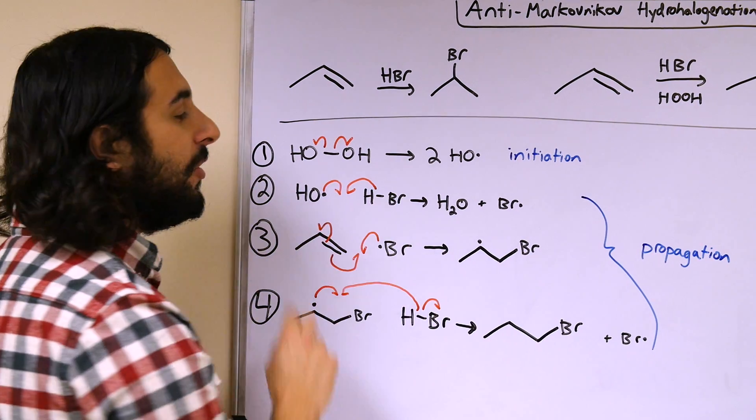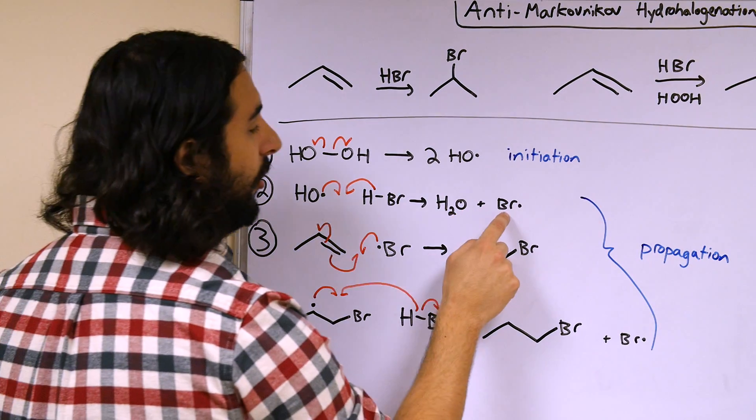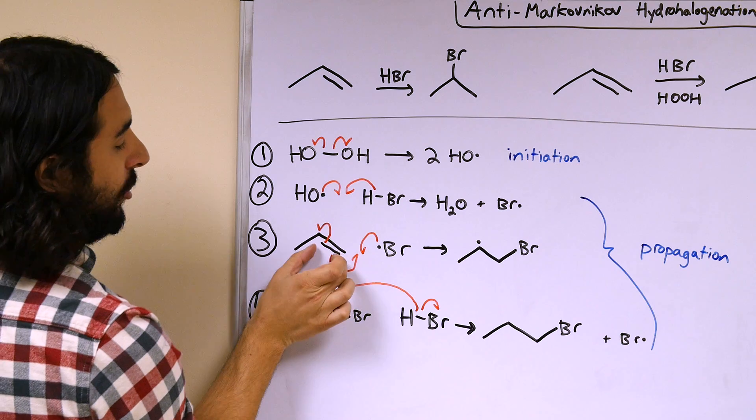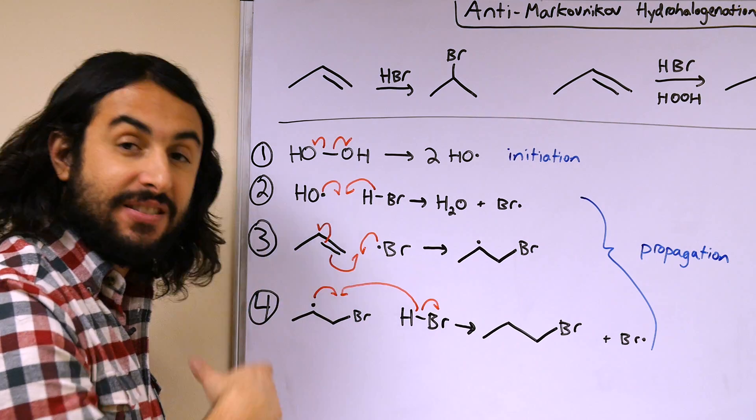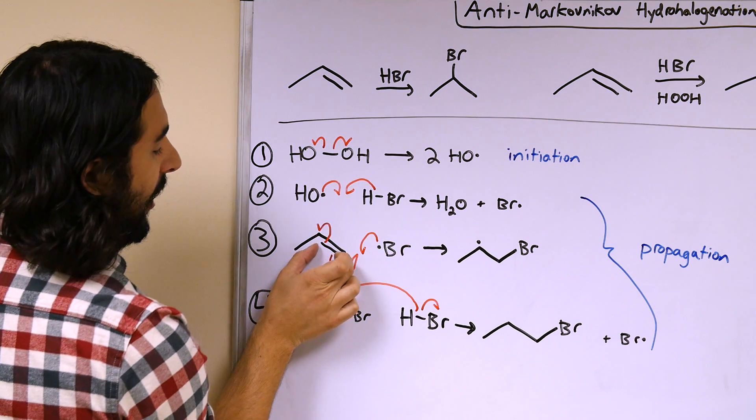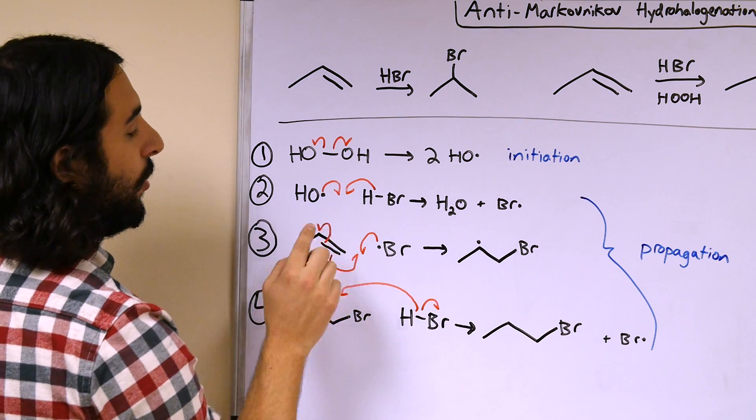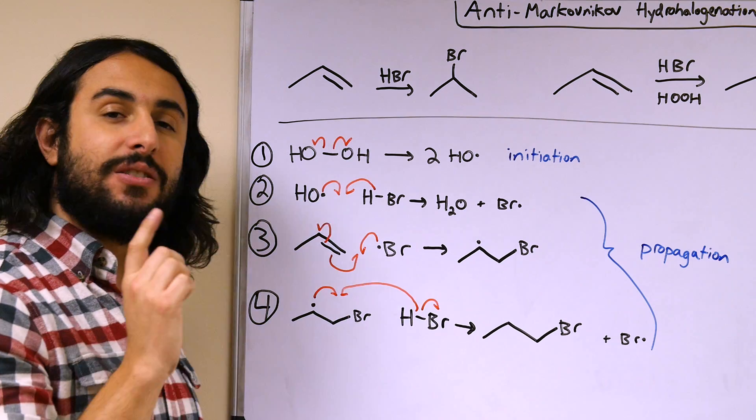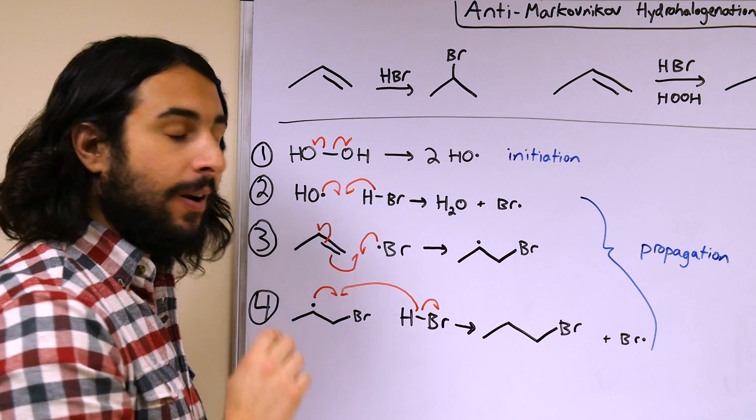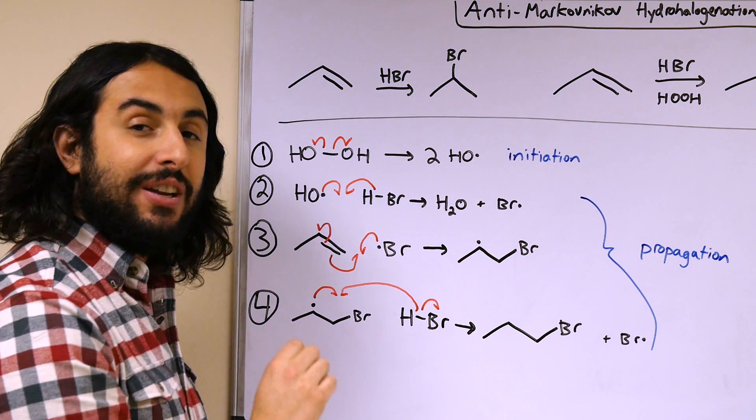Okay, then from there this is the key step because this is where the regiospecificity is involved. The bromine radical is going to interact with this pi bond that is necessary for the addition reaction. And what's going to happen is it's going to form a new carbon-bromine bond, but it is going to do it in regiospecific manner because of the stability of the alkyl radical that it will generate.